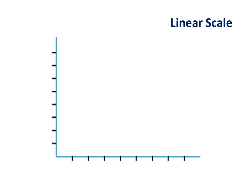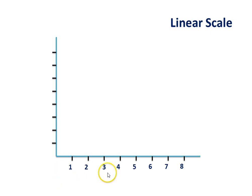Conventionally, graphs use a linear scale, which means numbers move sequentially. Along the bottom axis we have 1, followed by 2, followed by 3. Along the vertical axis they're moving in factors of 10 — 10, followed by 20, followed by 30, and so on. This is the way that most graphs are set out.